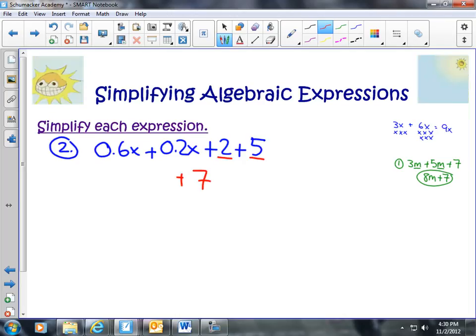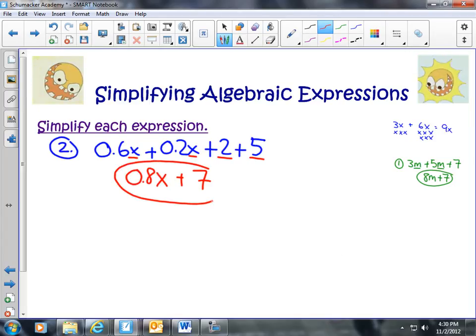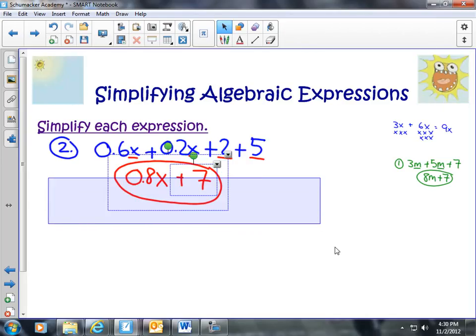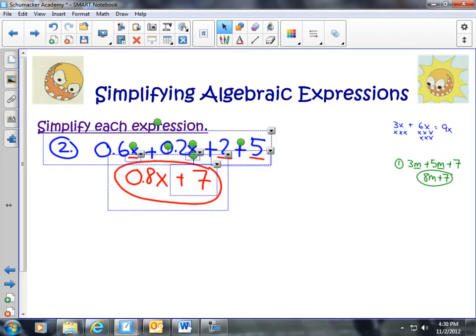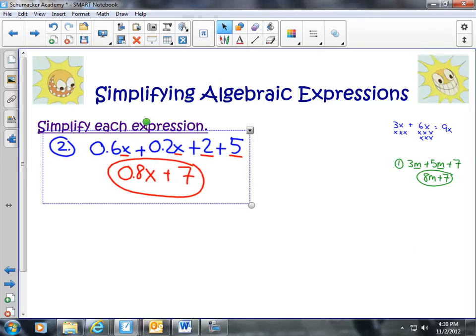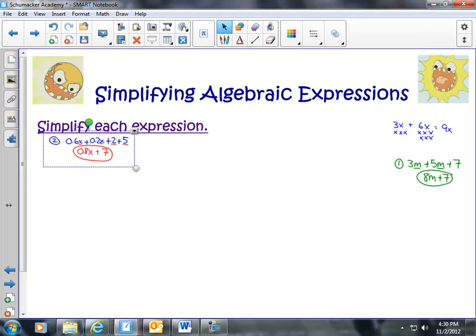And we can add our x's together, because they are the same variable. 0.2 plus 0.6, we get us 0.8x. And that would be our answer here. That's all you have to do to simplify it. You're going to add like terms. You may have one set of like terms. You may have two sets. You may have a lot of sets of like terms. But you can add them together and, therefore, simplify them.